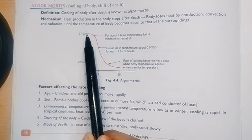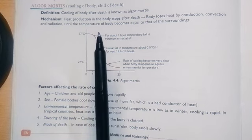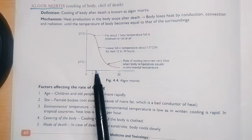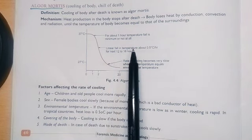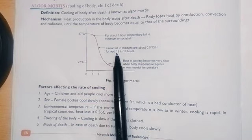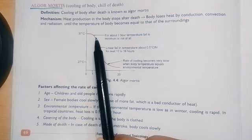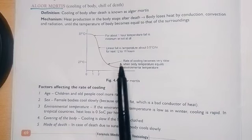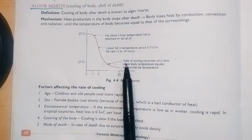Then, the next hour, the temperature falls linearly about 0.5 degrees Celsius per hour for the next 12 to 16 hours. So the linear fall of temperature is from 37 degrees to 27 degrees.